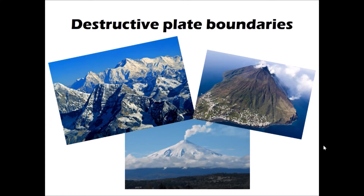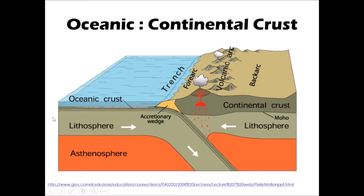In this video we're going to have a look at destructive plate boundaries and consider some of the processes and landforms that we find in each of the three settings that can make up a destructive plate boundary. The most familiar type is where we have oceanic and continental crust, or oceanic and continental lithosphere, meeting one another. To understand what happens here it's important that we remember the different properties of oceanic lithosphere compared to continental lithosphere.